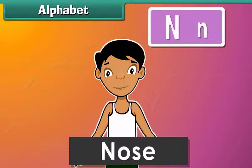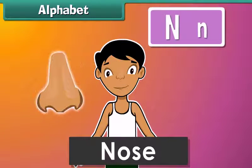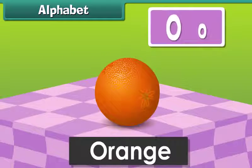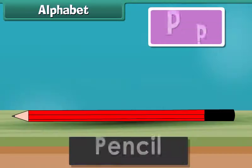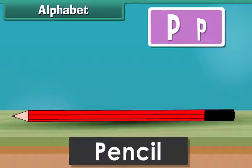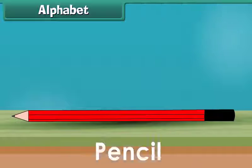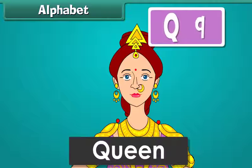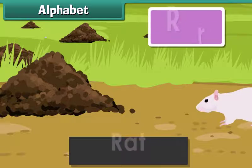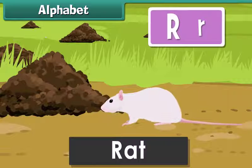N for Nose, O for Orange, P for Pencil, Q for Queen, R for Rat.